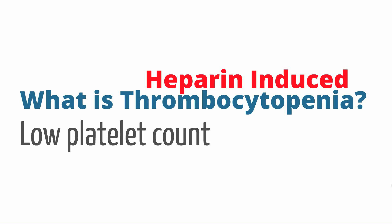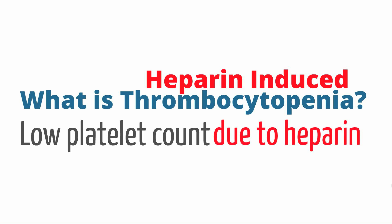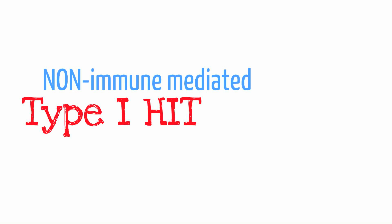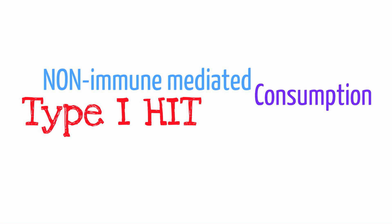Heparin-induced thrombocytopenia is when heparin, an anticoagulant agent commonly used in the hospital, leads to a drop in a patient's platelets. There are two types of heparin-induced thrombocytopenia. Type 1 is a non-immune mediated process — in some people, heparin causes platelet activation, leading to a partial consumption of platelets.